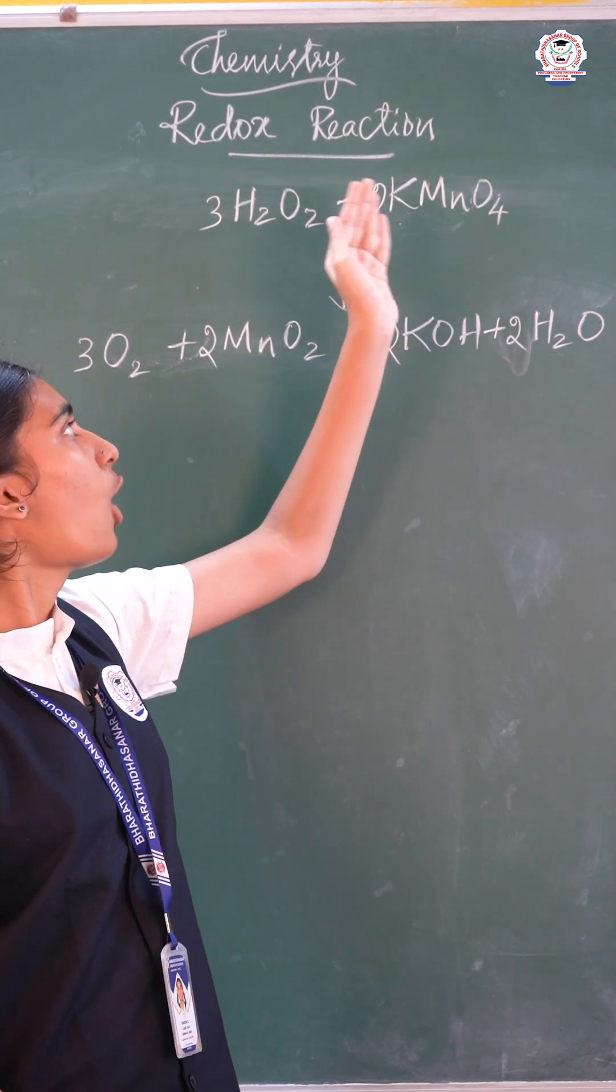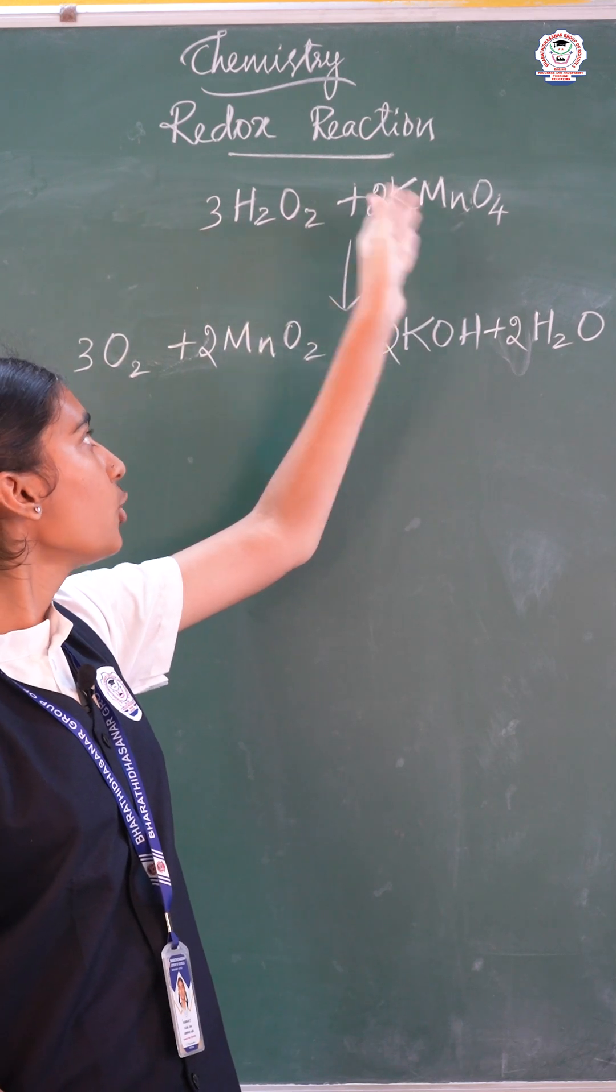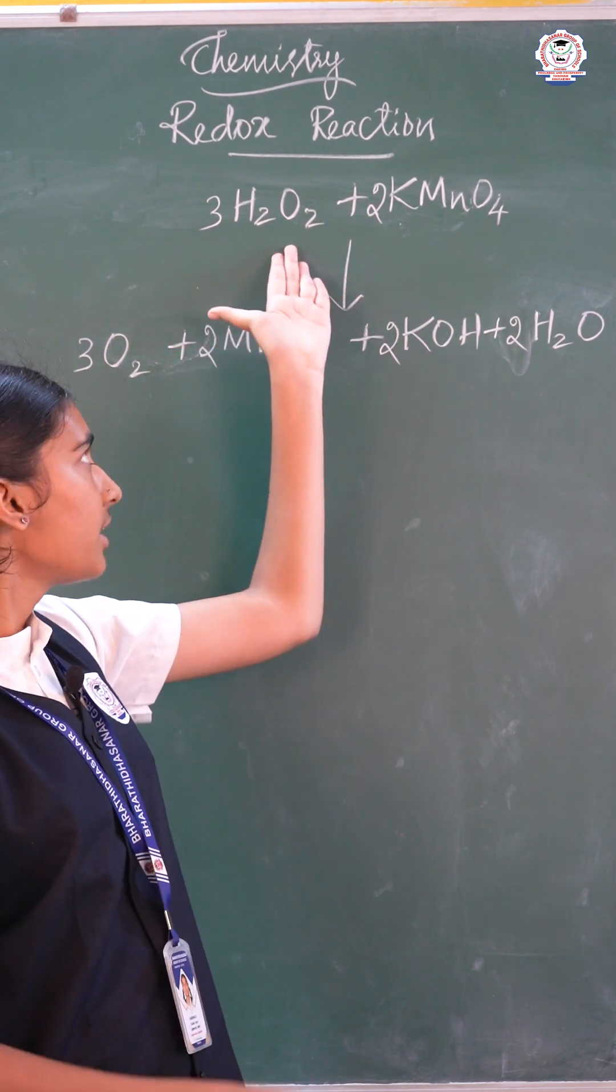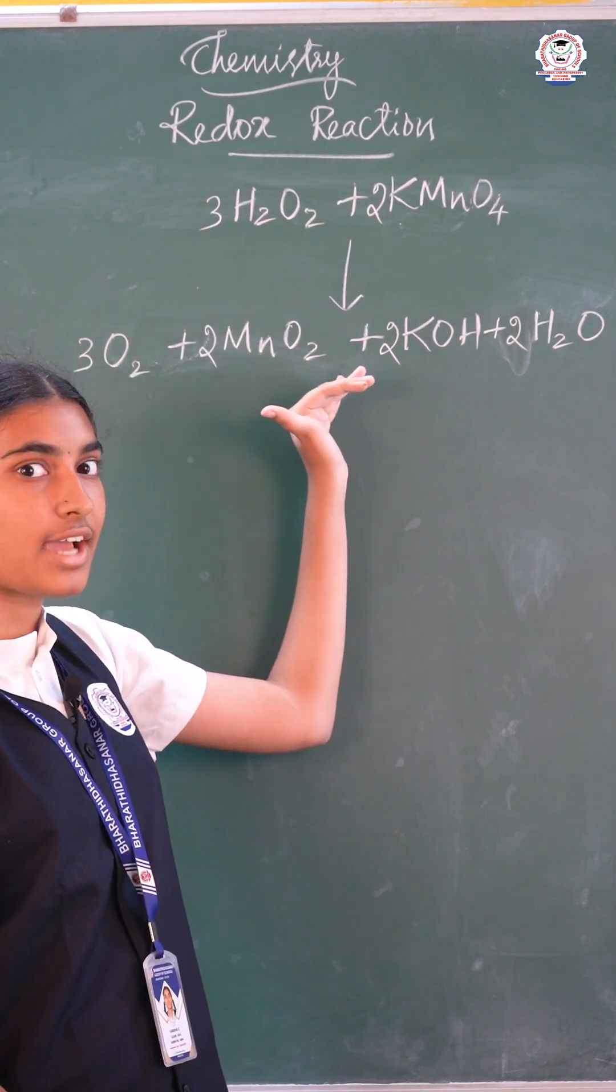Potassium permanganate acts as oxidizing agent. It is reduced into manganese dioxide. Both oxidation and reduction takes place in this reaction.